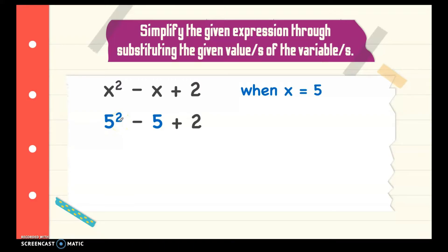That is 5 times 5. That is 25. So, 25. Minus 5 plus 2. Then, we subtract first before we add. So, 25 minus 5 is 20. Plus 2. The answer is 22.